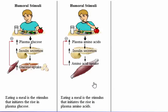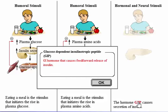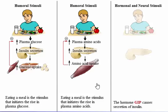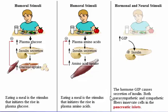Eating a meal is the stimulus that initiates the rise in plasma amino acids. The hormone glucose-dependent insulinotropic peptide, or GIP, causes secretion of insulin. As a meal is eaten, GIP is secreted from the gut and stimulates pancreatic beta cells to secrete insulin. This is a feed-forward mechanism that causes an earlier and larger secretion of insulin than would occur if glucose were the only stimulus for insulin secretion.